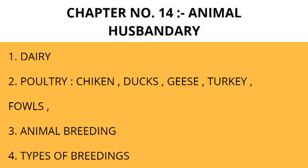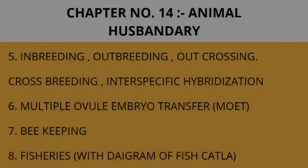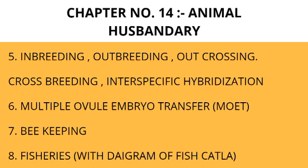Then animal breeding. Types of breeding: first in-breeding, out-breeding, out-crossing, cross-breeding, or inter-specific hybridization. Core definitions — put some time into one-word or short-answer type questions.